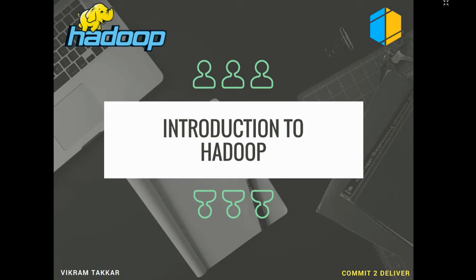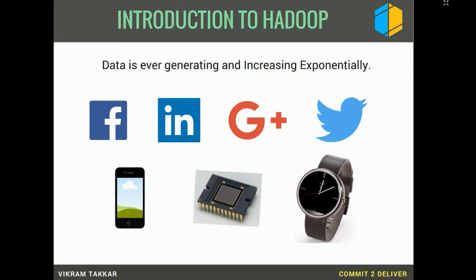We are living in an age of digital revolution where data is ever generated every second — piles of data are being generated. Let's take an example of Facebook. Facebook has 1.79 billion active monthly users. These users are uploading images, videos, posting text, commenting, liking images, liking posts — they are generating data by doing this.